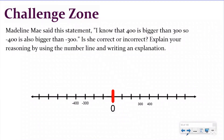Challenge zone! It says Madeline May said: 'I know that 400 is bigger than 300, so negative 400 is also bigger than negative 300.' Is she correct or incorrect? Explain your reasoning using the number line and write a sentence explanation. On my number line the intervals are 100, so I have 100, 200, 300, 400 and negative 100, negative 200, negative 300, negative 400. First I plot the positive numbers: 400 is further to the right than 300, so that part is correct.